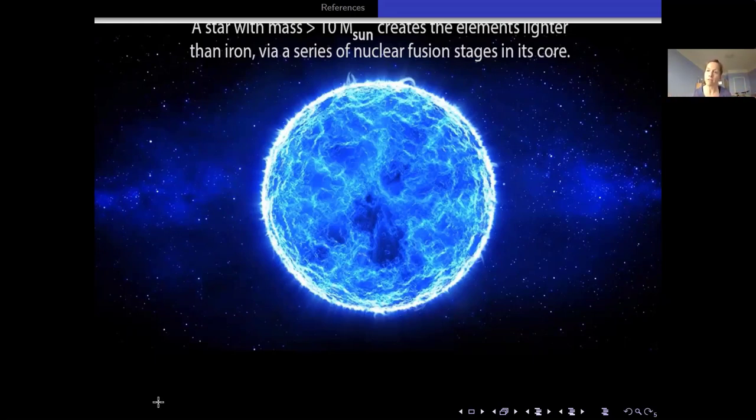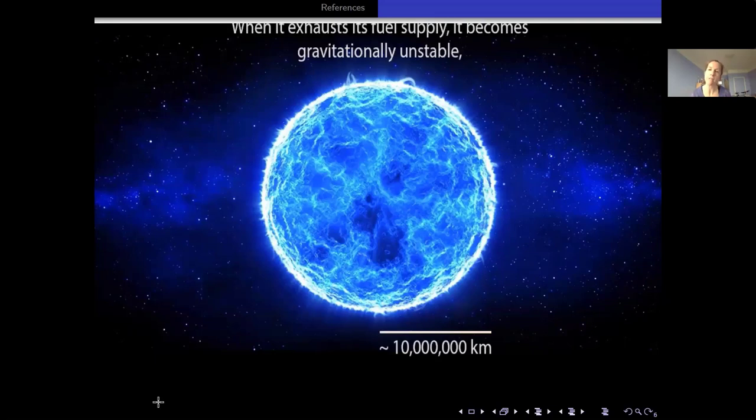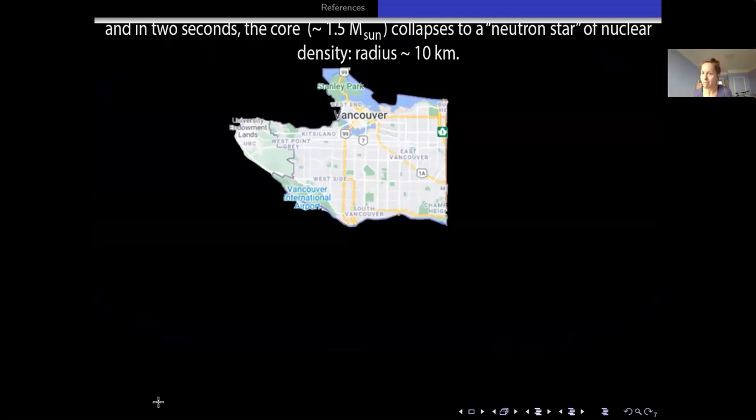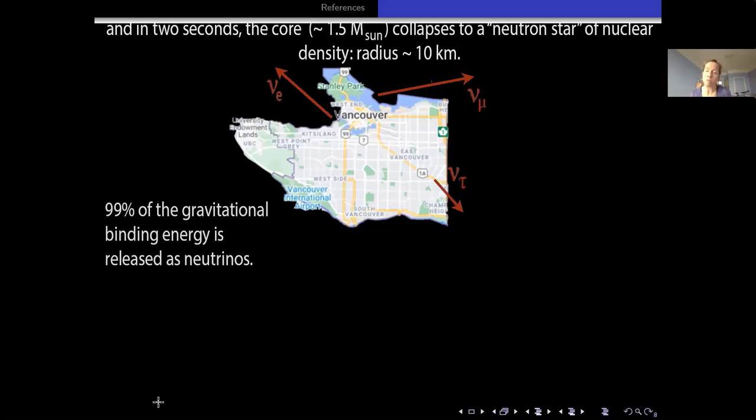The radiation pressure from fusion has sustained the star against gravity, but once it gets to iron, it's out of fuel. The only possibility is to collapse catastrophically under gravity, from a radius of about 10 million kilometers to about 10 kilometers within a second or two - the cross-section of Vancouver. Think about that gravitational binding energy. 99% of it is released as neutrinos, and you see three of them escaping here. The subscript on the neutrino is code for its flavor. There are three known flavors: electron, mu, and tau.